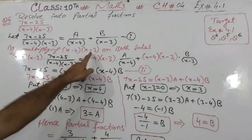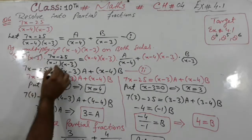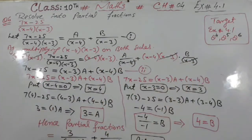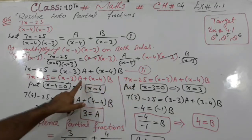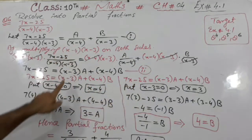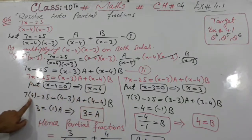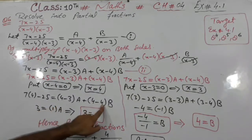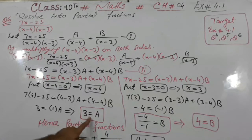By multiplying x minus 4 and x minus 3 on both sides to eliminate the fractions: x minus 4 and x minus 3 both cancel on the left; x minus 4 cancels on the A term and x minus 3 cancels on the B term. The remaining values form equation number 2. Putting x minus 4 equal to 0 gives x equals 4. Substituting 4: 7 times 4 minus 28 gives 28 minus 25 equals 3; 4 minus 3 equals 1 into A. The 1 divides without effect, so A equals 3.